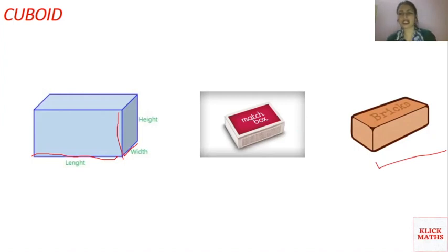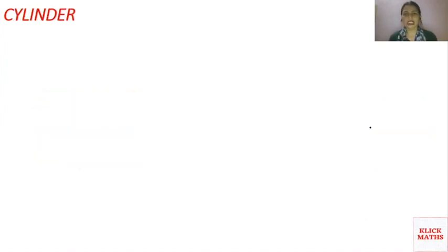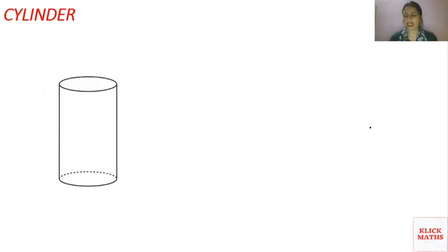Now I think it is very easy to understand these shapes using daily life examples. The next shape is a cylinder. In a cylinder, the base and the upper top part are both circles.